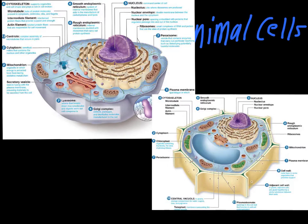Another important difference: centrioles. They're used during cell division, but only in animal cells. There is no equivalent in plant cells — cell division works a little bit differently in plant cells.